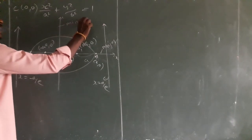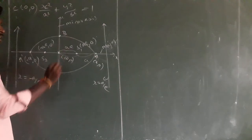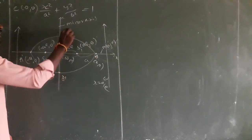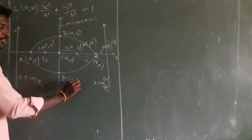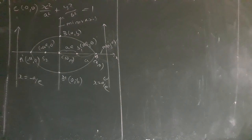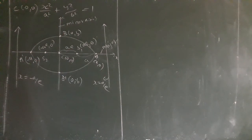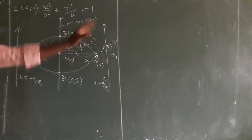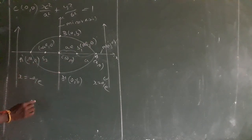Minor axis is also there. Mark as B and B dash. That is (0, B) and (0, minus B) — that is the length of the minor axis. So these are the points for the ellipse parallel to x-axis. Suppose center is at (0,0), then what is the center at (h, k)? From that diagram, main things you want to understand and solve the problems.